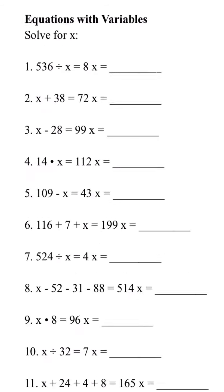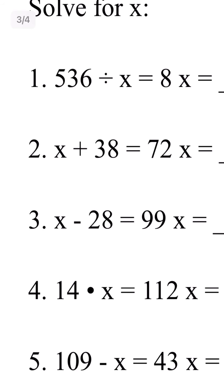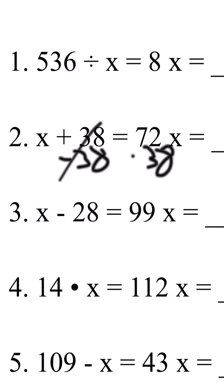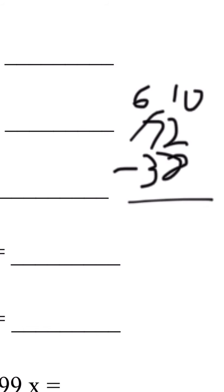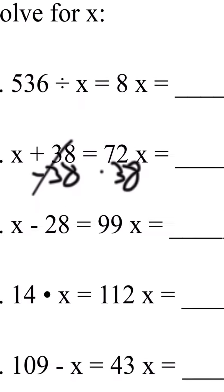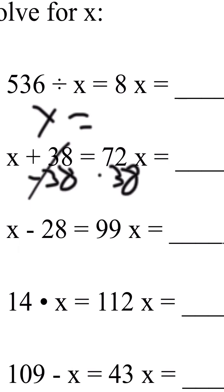Let's do number 2. When you make x alone, you need to subtract 38 from both sides. Cross out this number. 72 minus 38 is 34. And x equals 34.